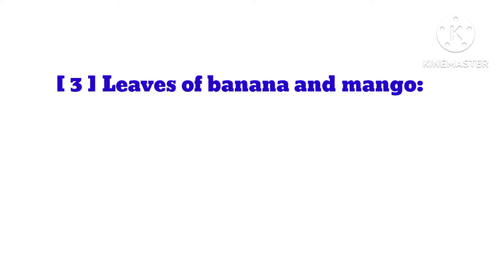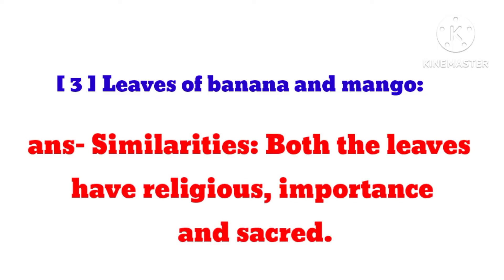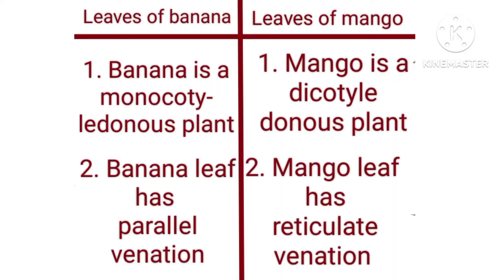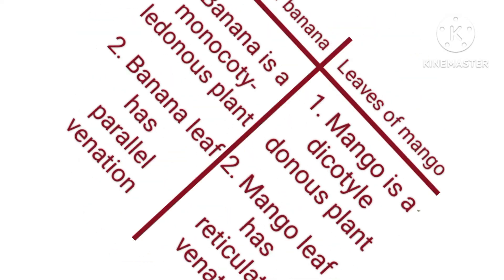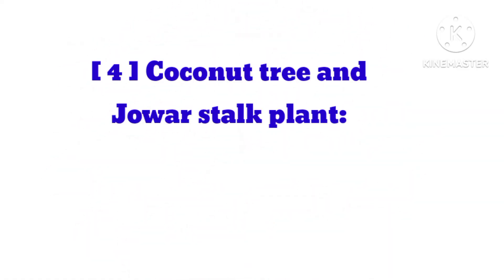Leaves of banana and mango — Similarities: Both leaves have religious importance and are considered sacred. Differences: 1. Banana is a monocotyledonous plant; Mango is a dicotyledonous plant. 2. Banana leaf has parallel venation; Mango leaf has reticulate venation.